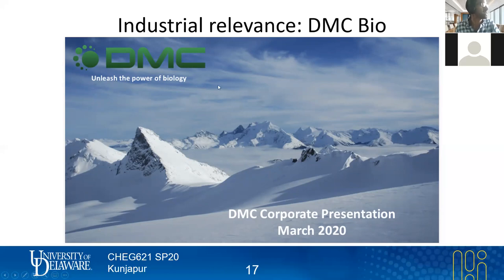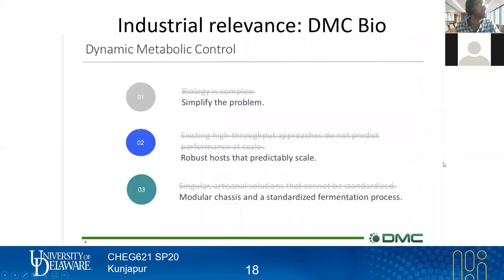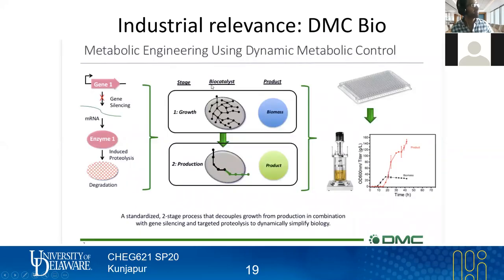They have a website and you can check it out. On their website they include their corporate presentation, from not that long ago and freely available, so I thought I'd share some slides. DMC stands for dynamic metabolic control. Their approach — kind of cheeky — takes different statements like people might ordinarily say in the field: 'biology is complex, simplify the problem,' or 'these high-throughput approaches don't actually predict things when you scale up — let's use something that scales and standardize things.' What they're doing is the basis of their commercial technology, really their whole company. Of course they've got specific products they may go after, but it's metabolic engineering using dynamic metabolic control.